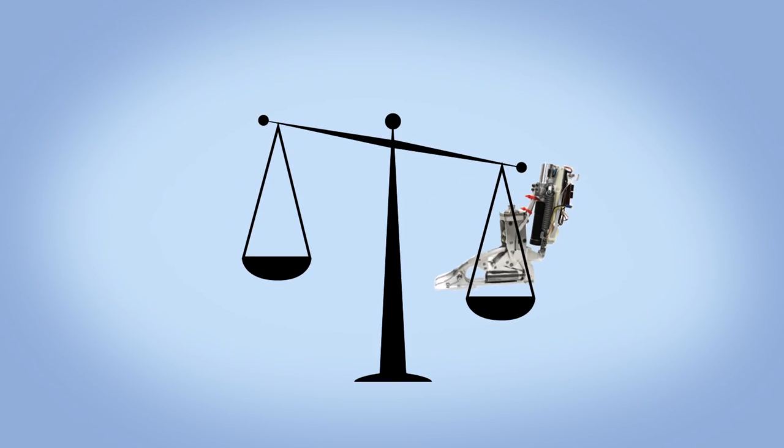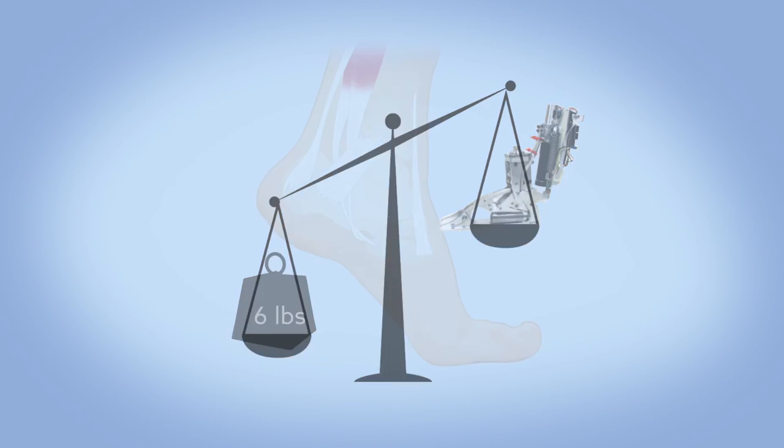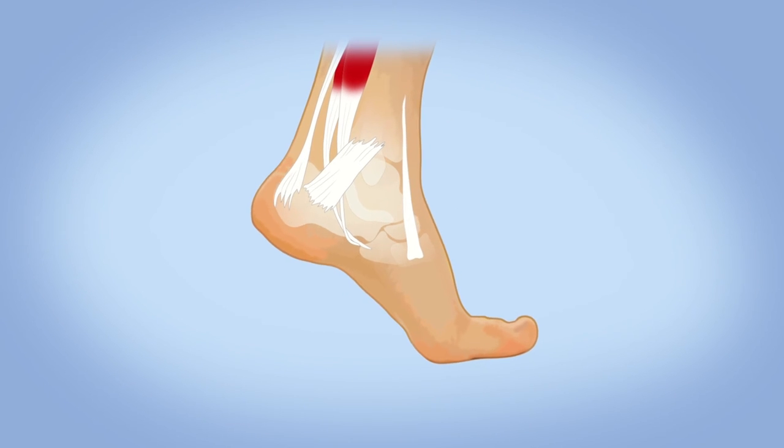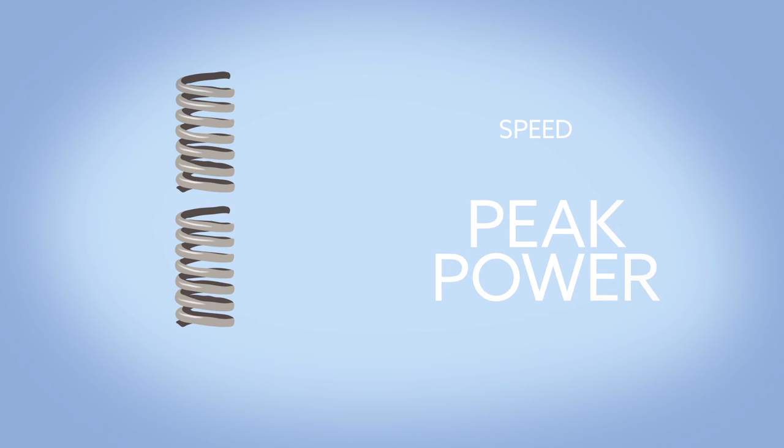All three of these state-of-the-art prostheses weigh under six pounds and are designed to replace the ankle, Achilles tendon, and calf muscles that propel the leg upward and forward during walking. Springs in series, however, reduce speed and, ultimately, peak power.